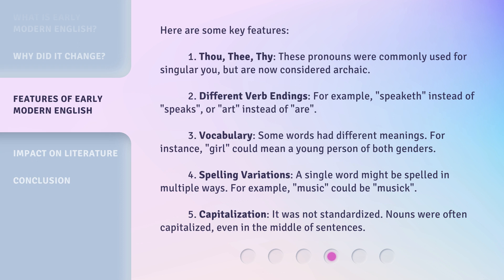Third, vocabulary: some words had different meanings. For instance, 'girl' could mean a young person of both genders. Fourth, spelling variations: a single word might be spelled in multiple ways — for example, 'music' could be spelled as 'musick.' Fifth, capitalization was not standardized; nouns were often capitalized, even in the middle of sentences.